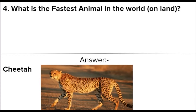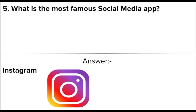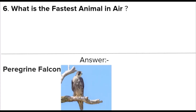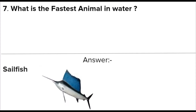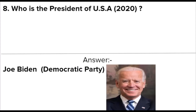Next question: What is the fastest animal in the world on land? Answer: Cheetah. Next question: What is the most famous social media app? Answer: Instagram. Next question: What is the fastest animal in air? Answer: Peregrine falcon. Next question: What is the fastest animal in water? Answer: Sailfish.